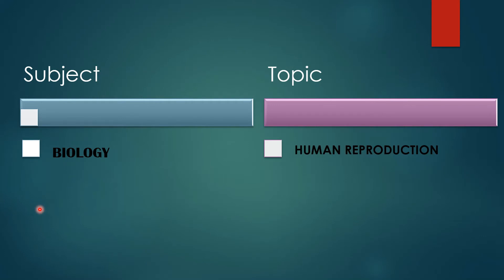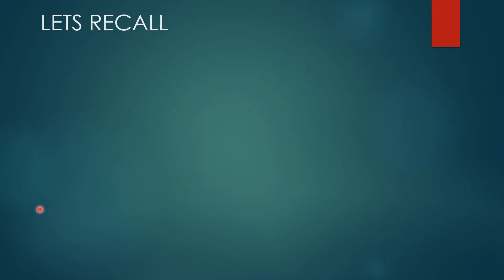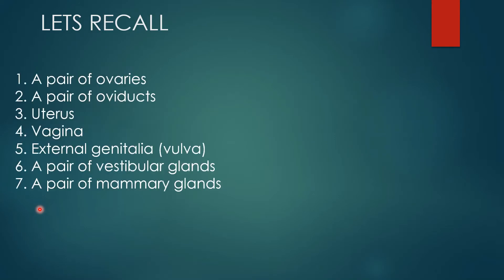I request you all to be seated with the notebook, pen and other stationeries. Before we proceed, let's recall what we studied in the last module. In the last module, we started with the female reproductive system in which we studied the pair of ovaries, pair of oviducts, uterus, and in today's module we are going to continue with the uterus and vagina.